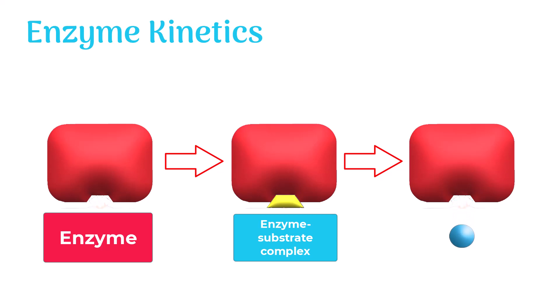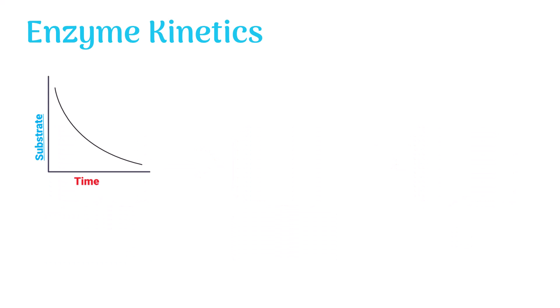Let's understand this with the help of graphs. In the initial stages, when the reaction runs, the amount of substrate decreases over time while the formation of the product increases.